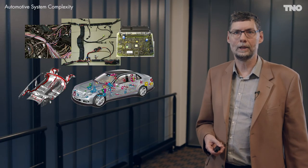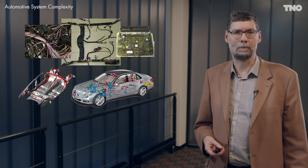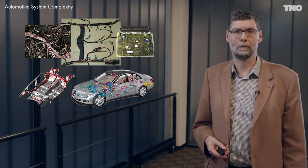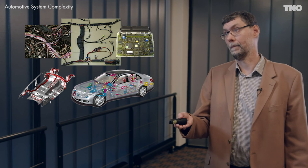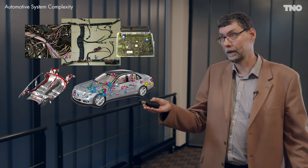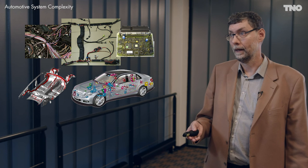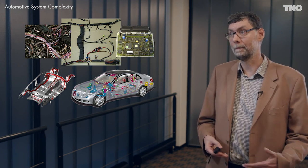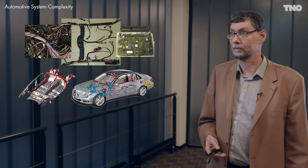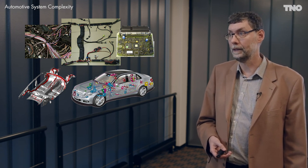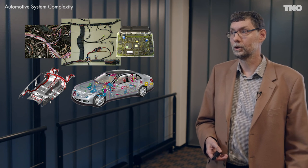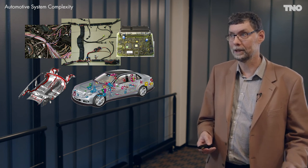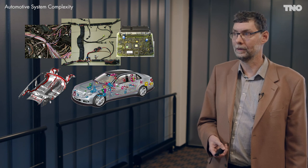If we look at another example — a car — we can see the complexity involved. In a typical car, we have millions of parts: many lines of code, around 30,000 electronic components, millions of connections, many mechanical parts each with many properties. So the whole system has a complexity defined by millions and millions of details.